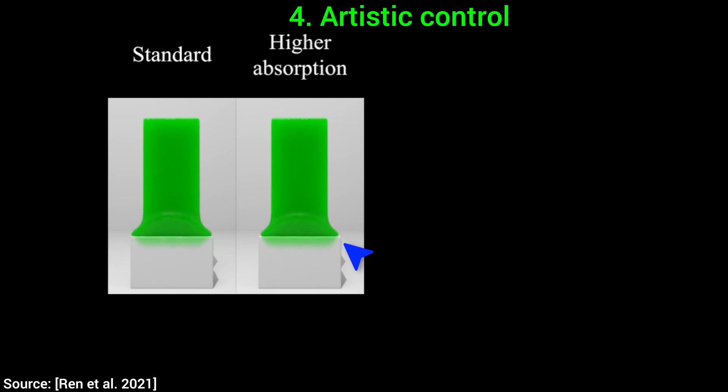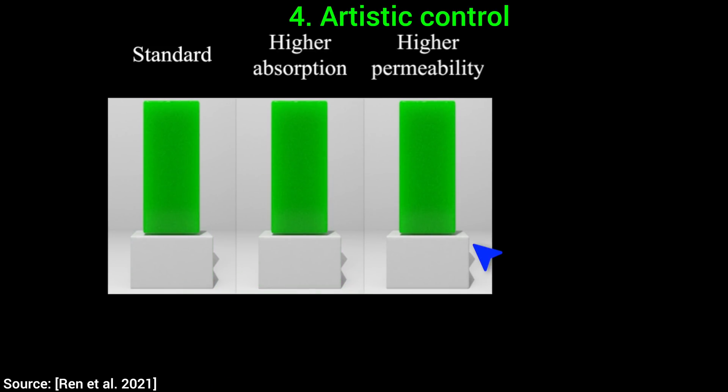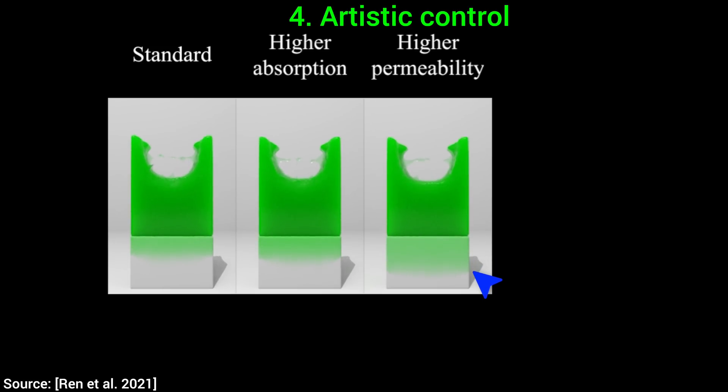For instance, let's increase the absorption rate so the fluid enters the solid faster. Or, we can increase the permeability, this is the ease of passage of the fluid through the material. Does it transfer quicker into the sponge? Yes, it does.